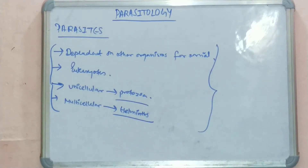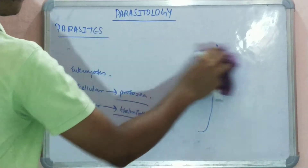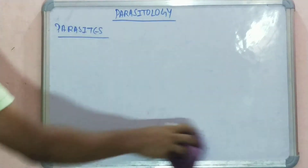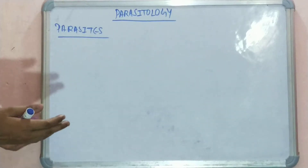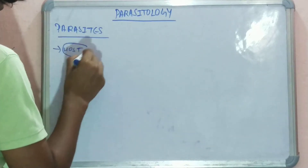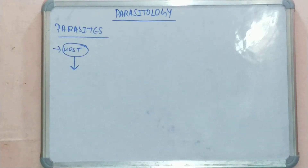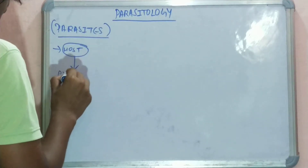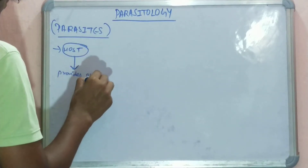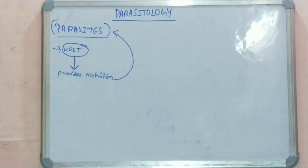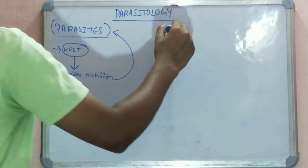Let's define some of the terms related to parasites. Parasites feed on host cells. What is a host? A host is an organism that provides nutrition to the parasite. Basically, the parasite feeds on host cells, so the host provides nutrition to the parasites.